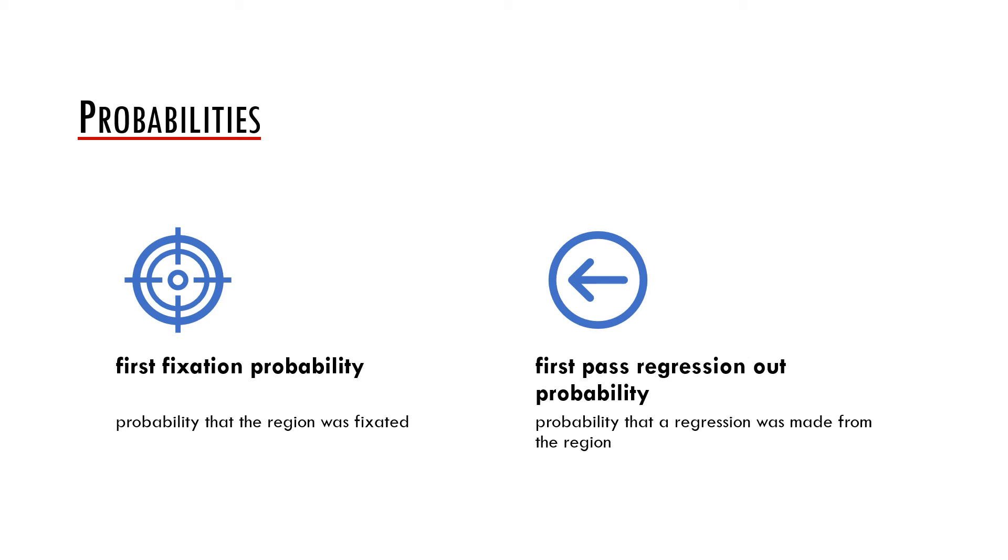There are also other measures which are less used but may be useful for specific research purposes. These are first fixation probability, which is an overall probability that the region was fixated throughout an experiment. Another measure is the first pass regression out probability. This is the probability that a regression was made from the region throughout the experiment.